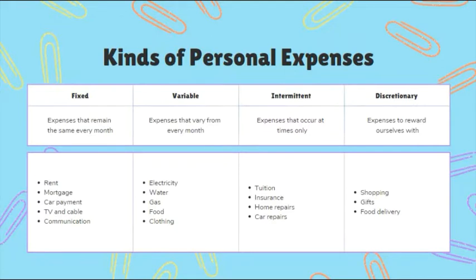Variable expenses change depending on our consumption — these include electricity, water, gasoline for your motorcycle, and food and clothing.